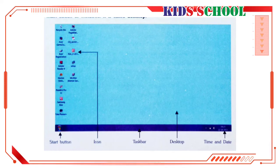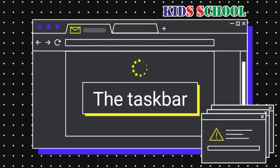The bar at the bottom of the desktop is called the taskbar. To the right of the taskbar you can see the date and time. To the left of the taskbar you can see the Start button. If you click on the Start button, you will see the Start menu. A menu is a list of tools or commands that help you to work in Windows programs.